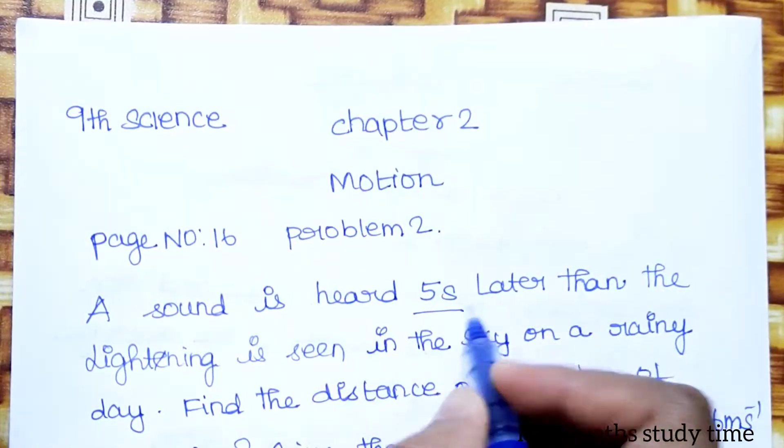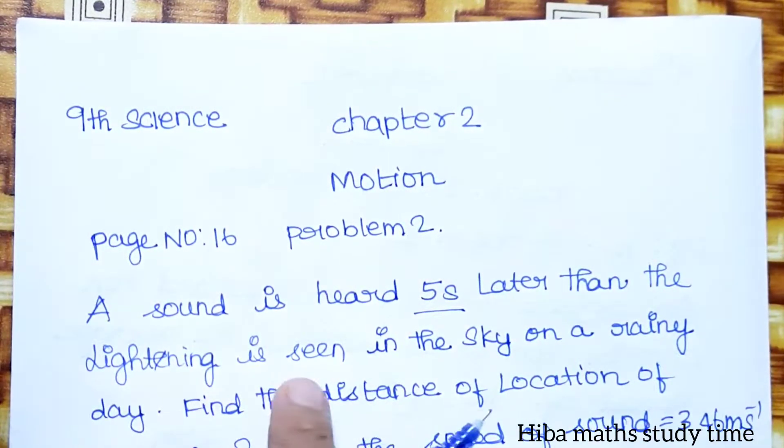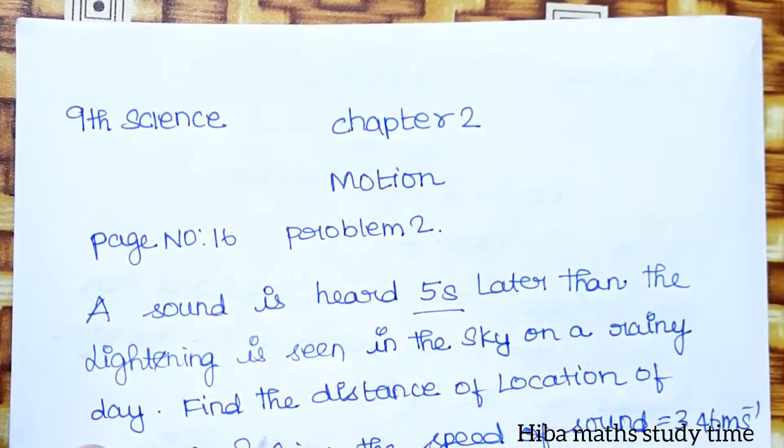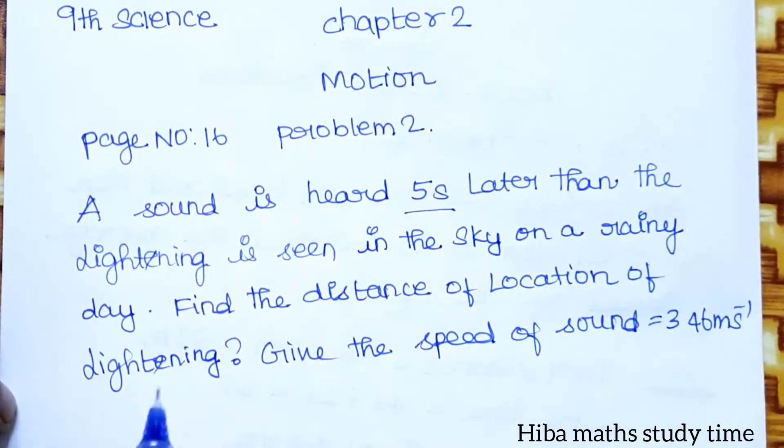A sound is heard 5 seconds later than the lightning is seen in the sky on a rainy day. Find the distance of the location of lightning, given the speed of sound is 346 meter per second.